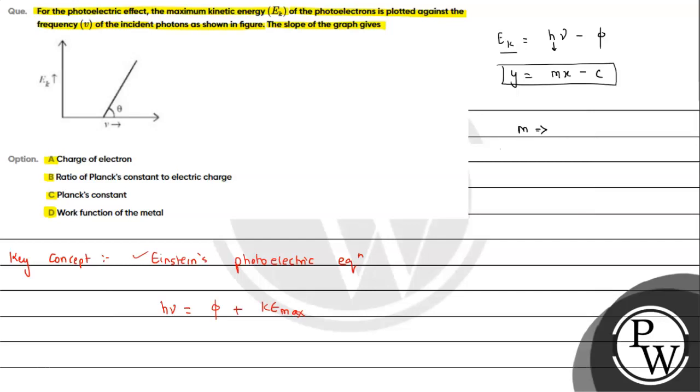The slope is representing Planck's constant, so this is the answer for the question. Option C will be the correct answer. I hope you understood the solution, all the best.